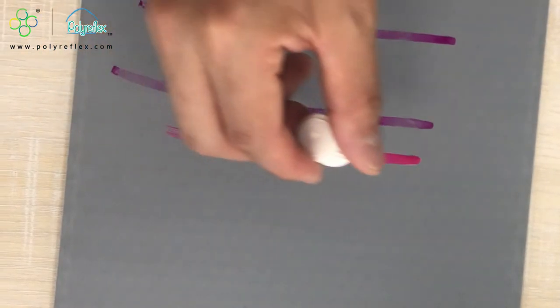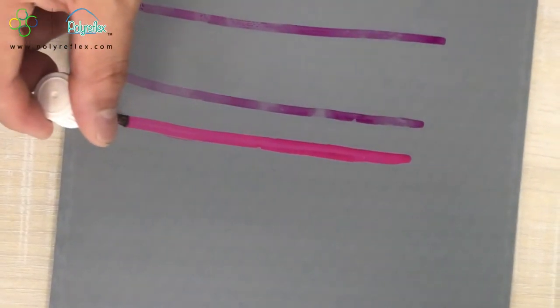We are now using a dyne pen to draw lines on the PP honeycomb board. What can be seen is the pink ink staying on the board.